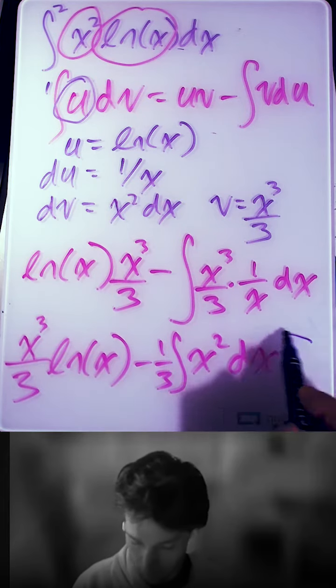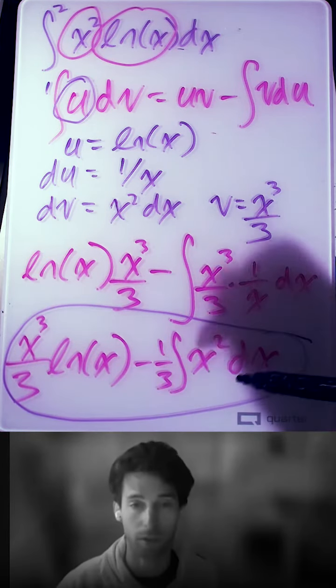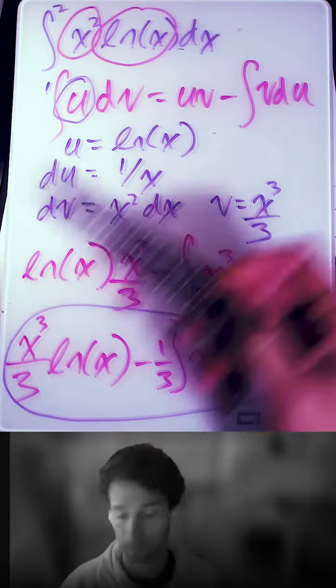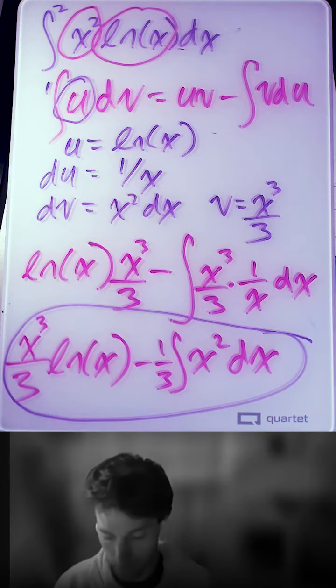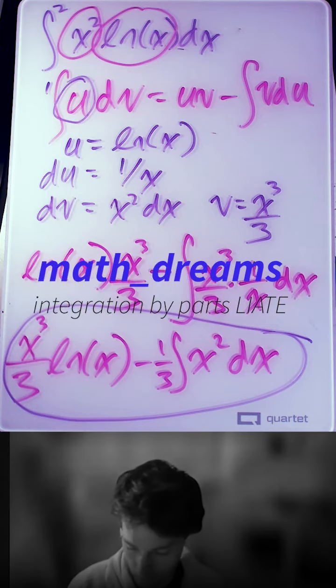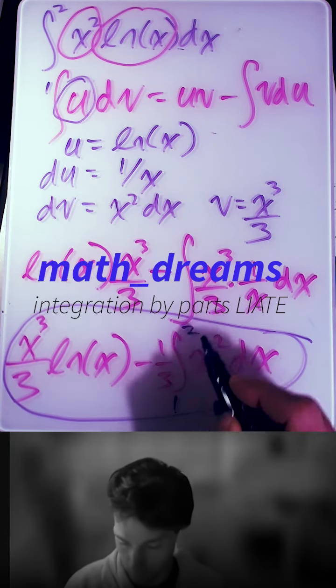So the whole point of integration by parts is to come up with an integral that's easier than the one you started with. So this is how you set it up. And of course, all of this is evaluated from 1 to 2.